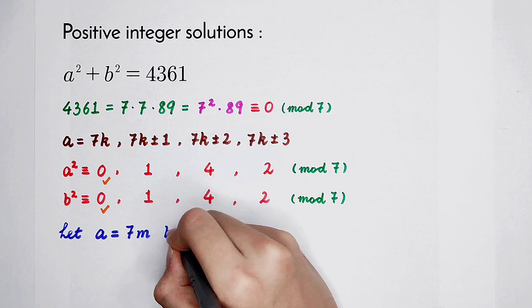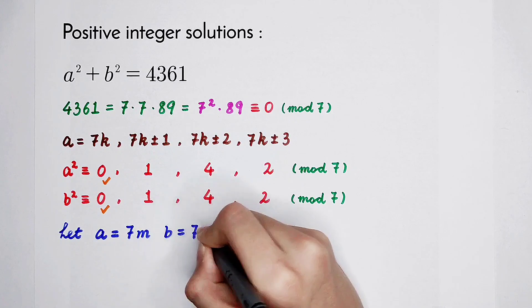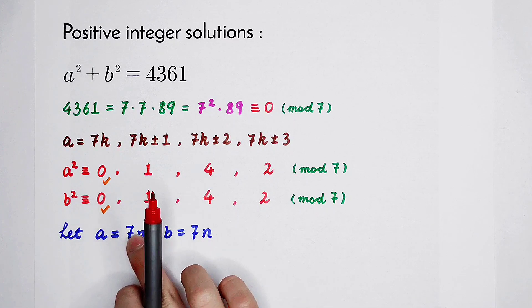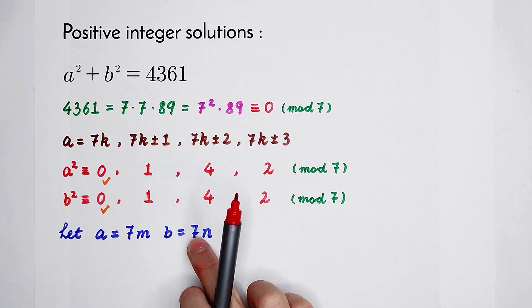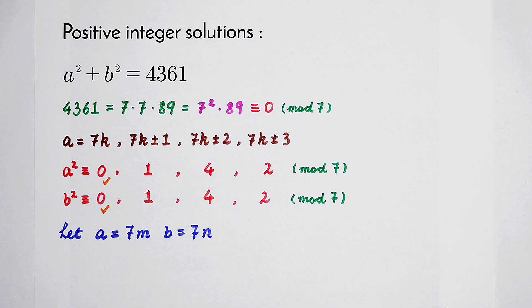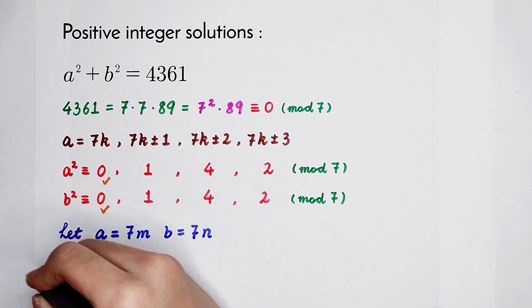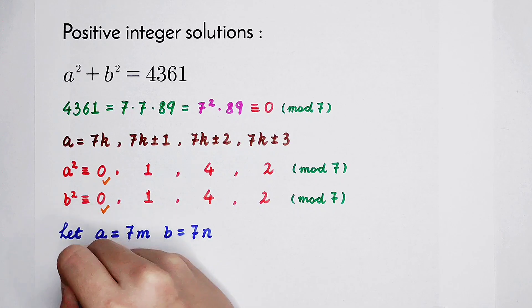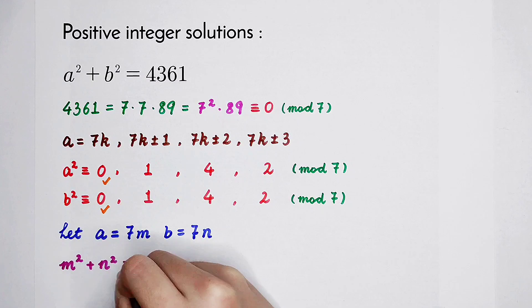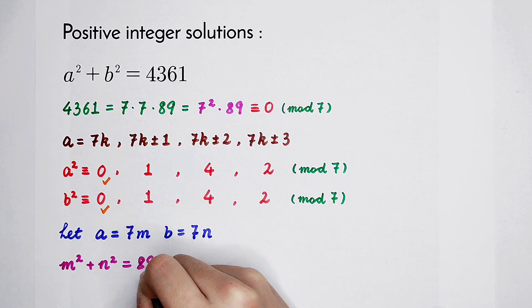And b is 7 times n. So now we can get 7 squared times m squared plus 7 squared times n squared equals 7 squared times 89. We can divide by 7 squared on both sides, and we get m squared plus n squared equals 89.